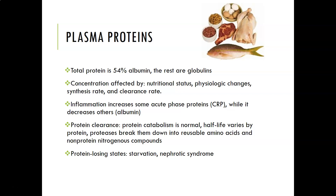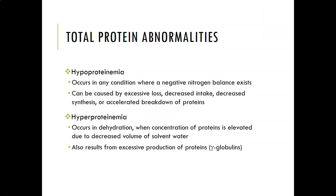Protein catabolism is normal — you have no way to store protein in your body, so you are always breaking it down and building new protein. The half-life varies by protein. Proteases are enzymes that break proteins down into reusable amino acids. Non-protein nitrogen compounds are separate waste products such as urea and creatinine. Hypoproteinemia — low levels of protein in the blood — occurs in any condition where there is a negative nitrogen balance.